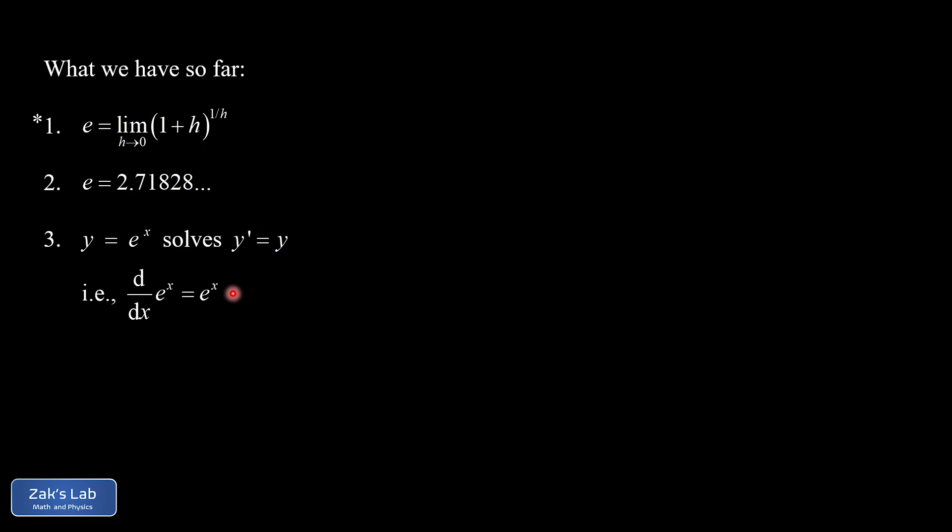So what about that asterisk? If we take the limit definition of e and we make a substitution letting n equal 1 over h, then as h goes to 0 from the right, n is going to positive infinity. So we can reformulate this definition as a limit as n goes to infinity of 1 plus h, but solving for h in our substitution there, h is 1 over n. So it's a limit as n goes to infinity of 1 plus 1 over n. And then that whole thing is raised to the nth power. Now in practice, I seem to see these two definitions of e in about a 50-50 ratio. So it's good to be familiar with both of them.